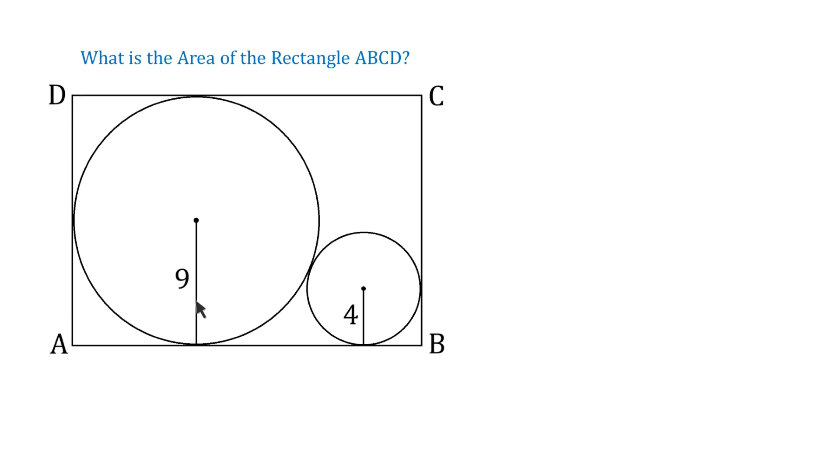First of all, the radius of any circle is always perpendicular to the tangent line at the point of tangency. So then, this angle is a right angle, and so is this one. Let this point of tangency be point E, and this one F. Now, the distance AE is 9 units, because this is the same as the radius of the circle. And FB is 4 units.